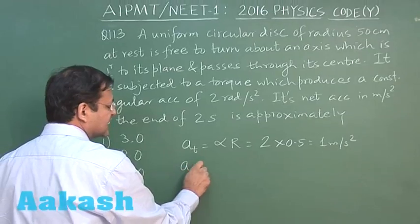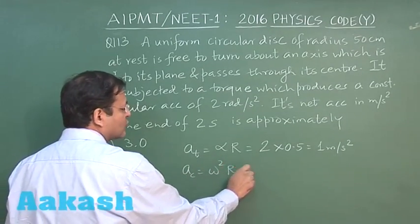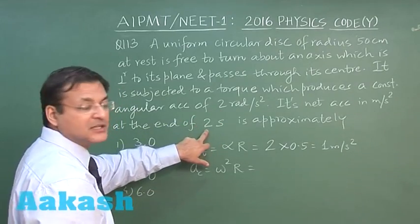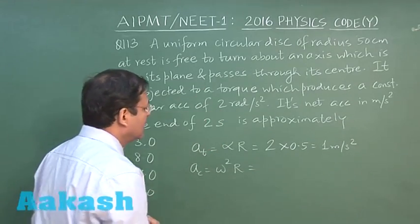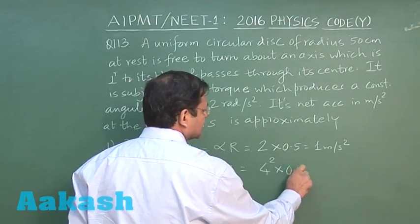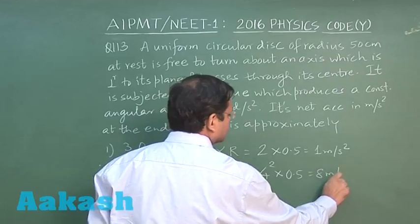And what is centripetal acceleration? This is omega square r. Now what is omega? Omega is simply alpha into t. You see alpha is 2 and time is 2 second, 2 times 4. 4 square multiplied by r is 0.5. So this is 8 meter per second square.